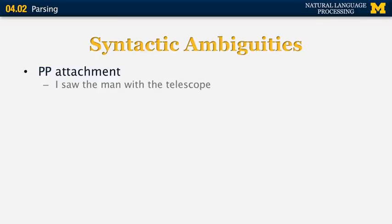We've talked about syntactic ambiguities before. One problem is prepositional phrase attachment. In the sentence 'I saw the man with the telescope,' we can have one interpretation where I used the telescope to see the man, and another where I saw a man who was himself carrying a telescope. This is a PP attachment problem because the prepositional phrase 'with the telescope' can attach to either the verb or to 'man,' which is the direct object.